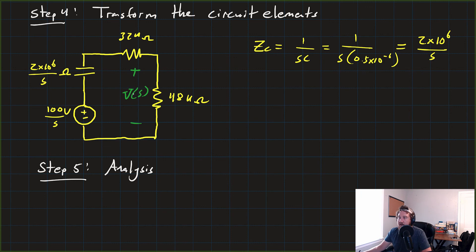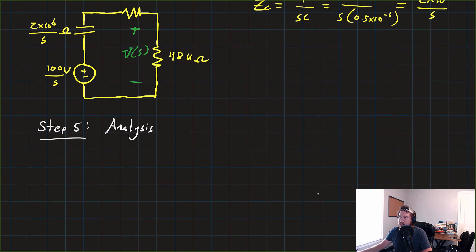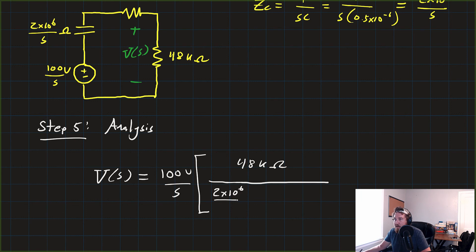Now, we're interested in calculating this voltage. So for a circuit like this, we're just going to use a very simple voltage divider. So we'll see that our voltage, V(S), is equal to the source voltage, 100 volts over S, times the voltage we care about. I'm just going to write it as 48 kilohms. But when you do the algebra, remember it's 48,000. Plus the sum of all of the impedances. So 2 times 10 to the 6 over S plus 32k plus 48k.